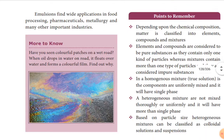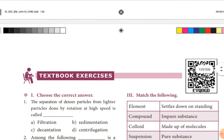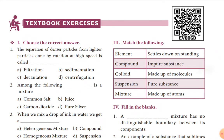Dear students, this lesson is over. We have to discuss questions and answers. You have to note down and write question and answer in your classwork. You can write physics and chemistry in the same classwork or in separate notebooks. The first question from textbook evaluation: the separation of denser particles from lighter particles done by rotation at high speed is called centrifugation.